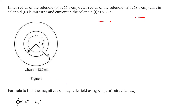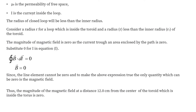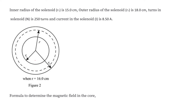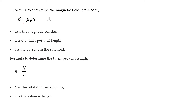To find the magnitude of magnetic field using Ampere's Law, we write the line integral equal to μ₀i. Inside the inner radius, the magnetic field is 0. For a point at 16 cm, which lies between the inner and outer radii, the formula is B = μ₀ni, where μ₀ is the magnetic constant, n is the turns per unit length, and i is the current. We find n as the total number of turns divided by the length of the toroid.